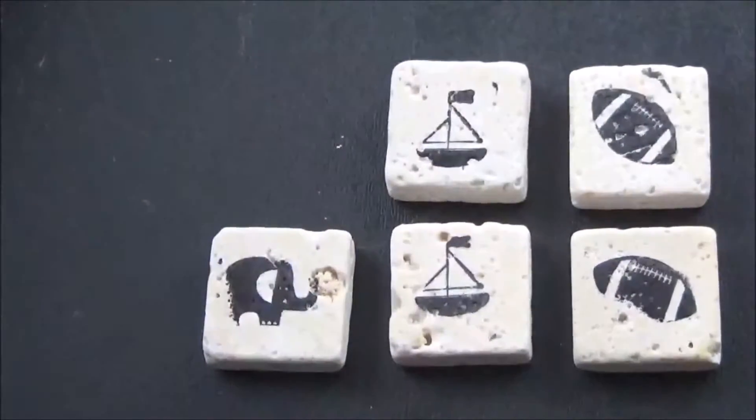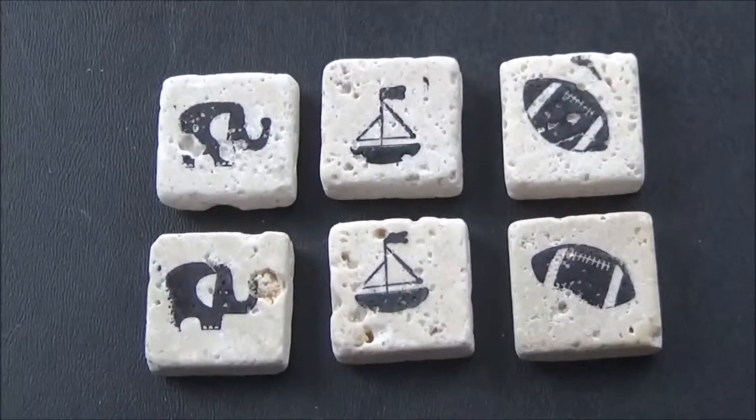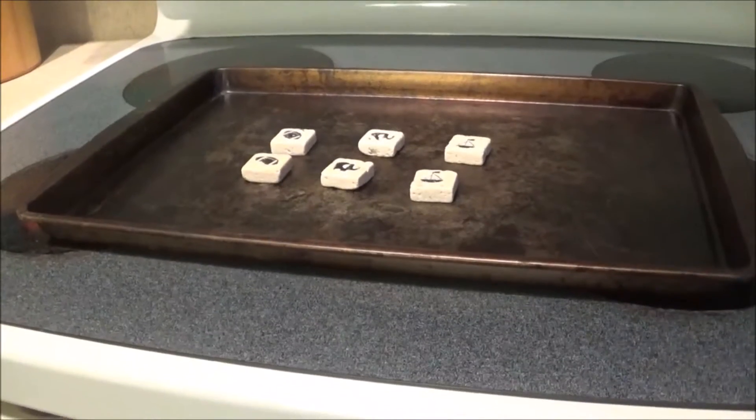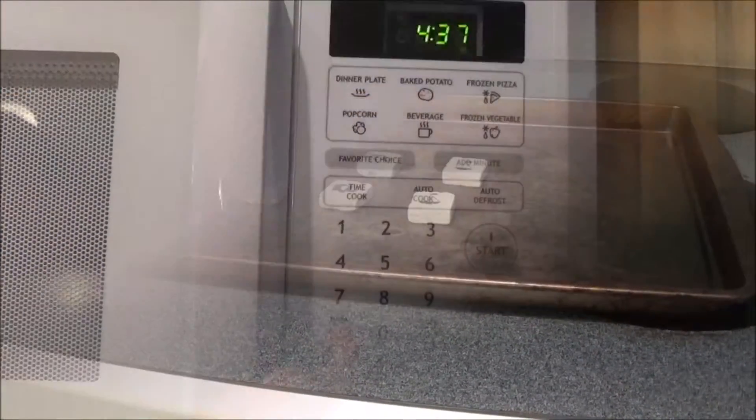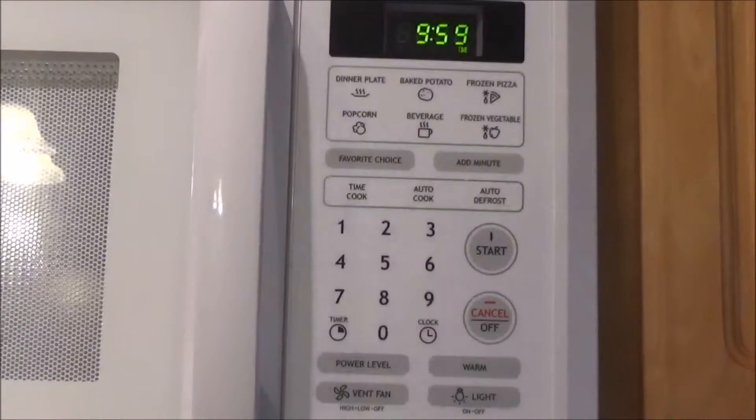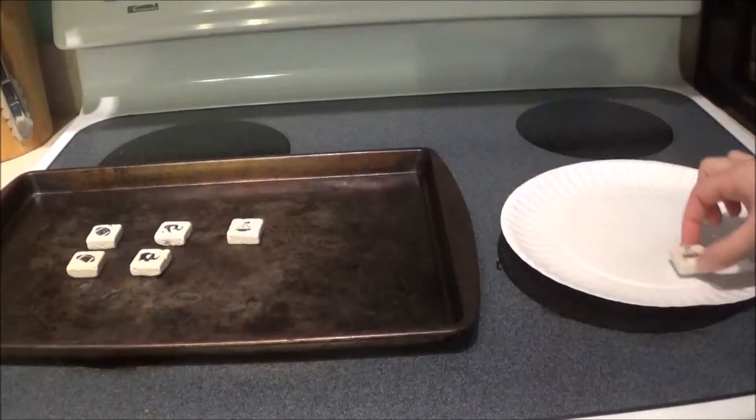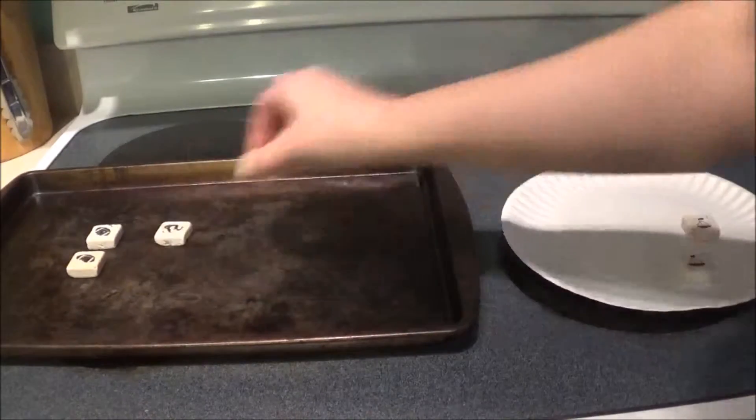Here are the stamped tiles before we turn them into magnets. You want to place these on an old baking sheet and put them in the oven for 10 minutes. Once your magnets have cooled down, because they will be very hot coming out of the oven...